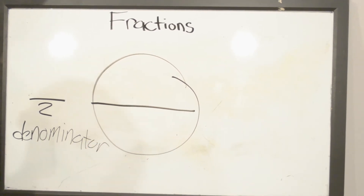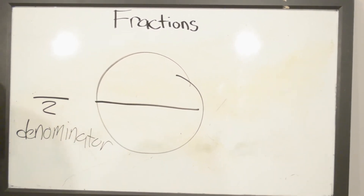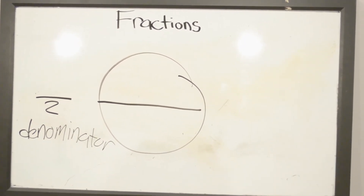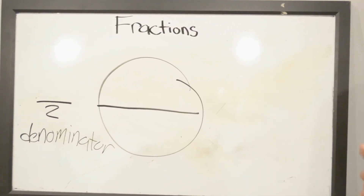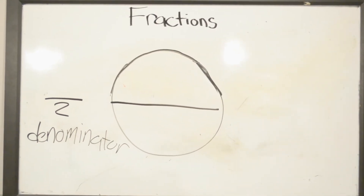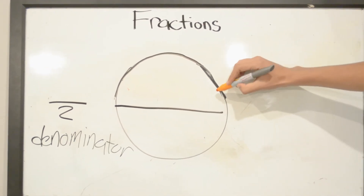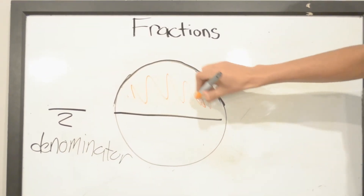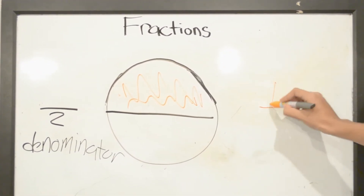The reason why our denominator will be 2 is because there are 2 spaces: 1, 2. So now we move on to our numerator. For our numerator, we will shade in 1 part. So right here we will write down 1.